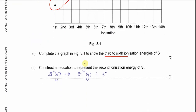Part two: construct an equation to represent the second ionization of silicon. The second ionization energy must start from the silicon ion with a charge of +1 in the gaseous state — Si⁺(g) — to form Si²⁺(g) with one electron removed.